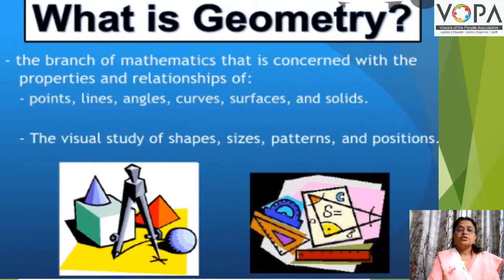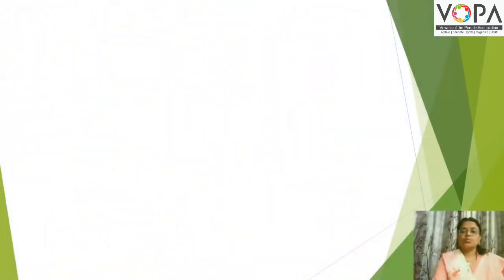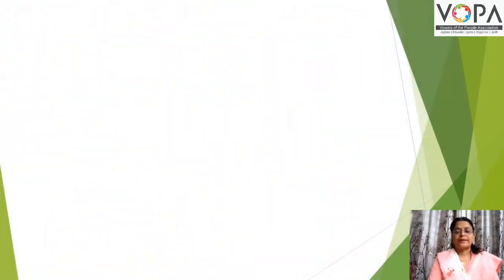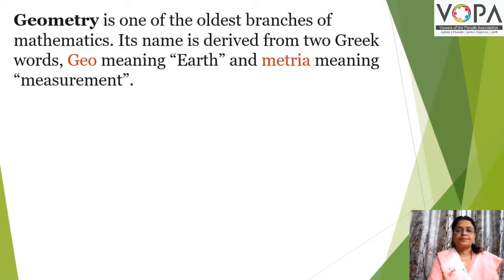Geometry is one of the oldest branches of Mathematics. Its name is derived from two Greek words — Geo meaning Earth and Metrio meaning Measure.